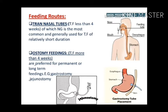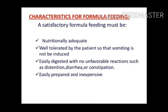For route selection: if tube feeding is required for less than 4 weeks — such as post-operative or accident cases — we use trans-nasal routes. But if we know the patient will require it for more than 4 weeks, we try to give them a permanent opening such as gastrostomy or jejunostomy. Patients in coma or with GBS or reduced muscular activity may also receive these.